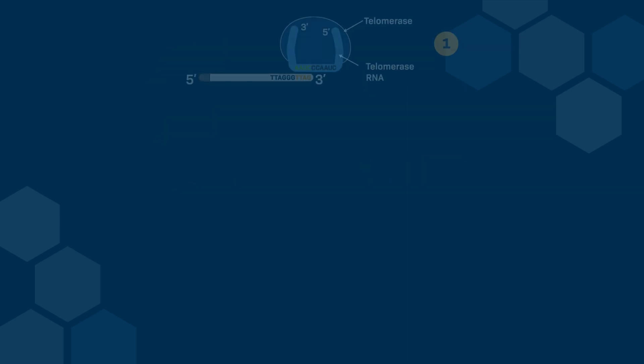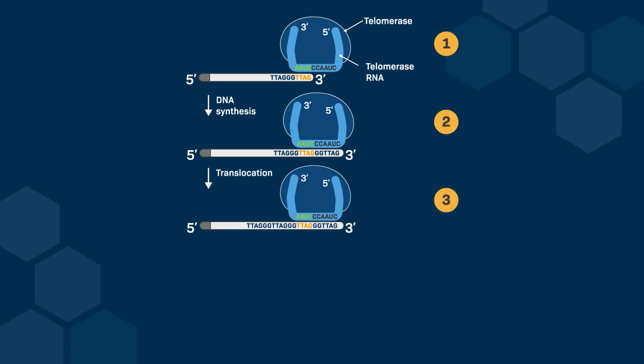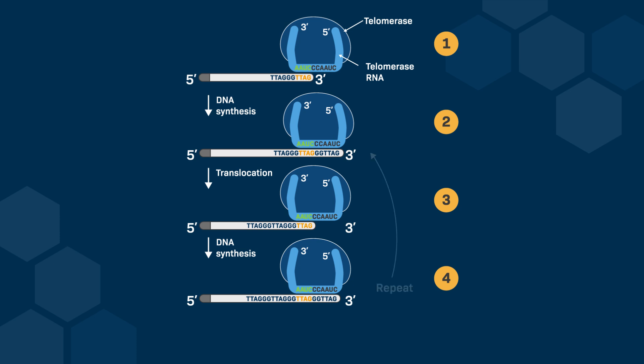The enzyme telomerase, which contains an RNA template, binds to the overhanging end of the telomere, the repetitive DNA sequence at the end of chromosomes. Using its built-in RNA template, telomerase extends the leading strand by adding repetitive nucleotide sequences to the telomere's 3' end. Telomerase shifts along the newly extended strand, repeating the extension process multiple times to elongate the telomere further. Once the leading strand is extended, normal DNA replication machinery like primase and DNA polymerase fills in the complementary lagging strand, stabilizing the telomere and preventing chromosome degradation.